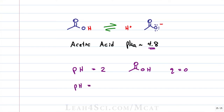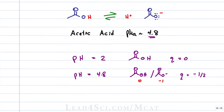If the pH equals the pKa of 4.8, we get 50% protonated and 50% deprotonated. The average charge of all molecules in solution will equal −½. We have a charge of zero for the protonated form, negative one for the deprotonated form, and the average between zero and negative one is negative one-half. As pH goes up, the charge becomes more negative; as pH goes down, it becomes less negative, with the ideal buffer range within one pH unit above or below the pKa. At pH 3.8 we have a 10-to-1 ratio of protonated to deprotonated.